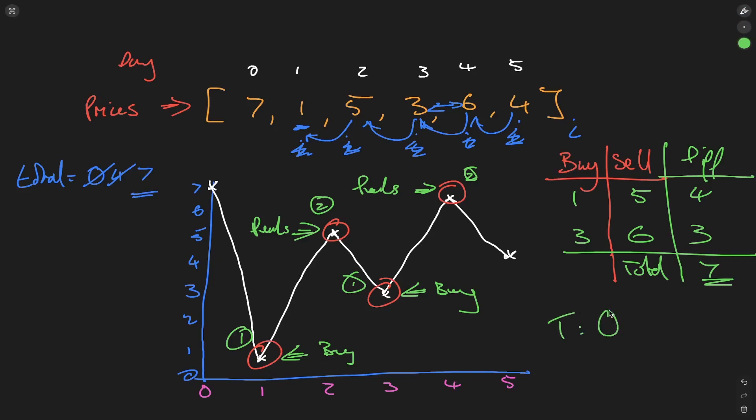Time complexity for this algorithm is O(n), where n is the size of the input array prices. Space complexity is O(1), constant space.